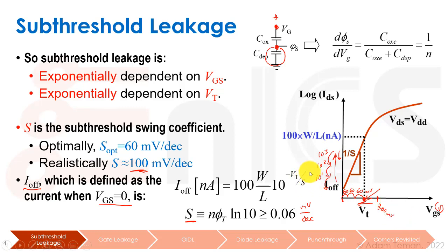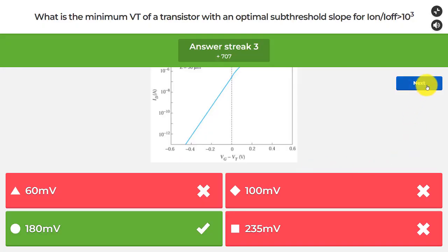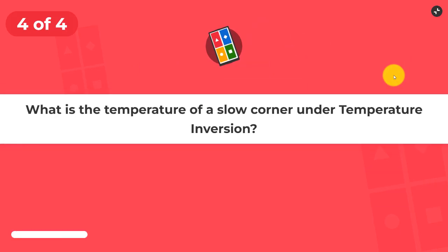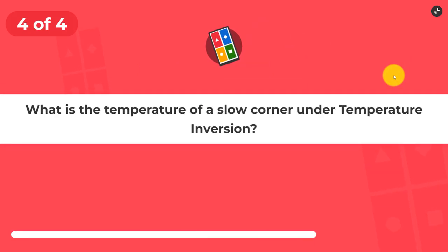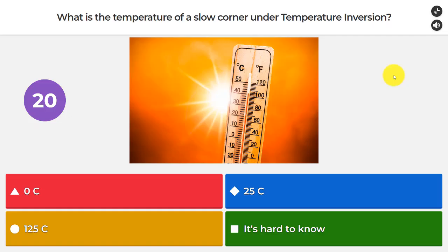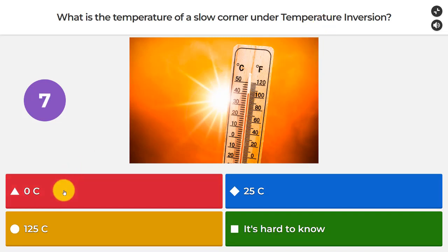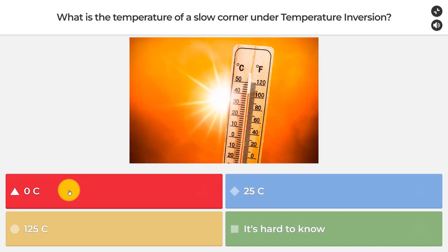Our final Kahoot question: what is the temperature of a slow corner under temperature inversion? Is it 0°C, 25°C, or 125°C? Under temperature inversion, a slow corner is actually going to be at zero degrees Celsius.